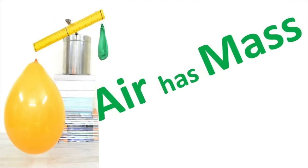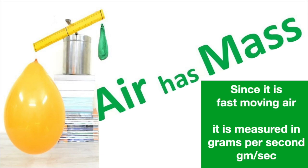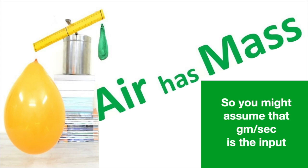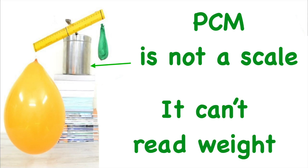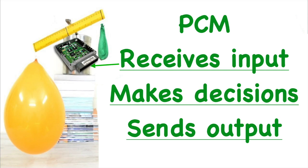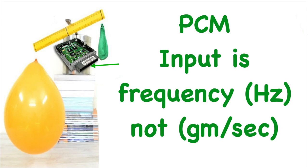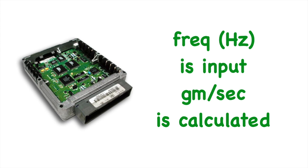What about grams per second? Air has mass, and all mass has weight. Since it is fast-moving air, it is measured in grams per second. You might assume that grams per second is the input, but the PCM is not a scale — it can't read weight. The PCM is a logic device: it receives input, makes decisions, and sends output. The PCM input is frequency, not grams per second. Grams per second is a calculated value, not an input. Frequency, or Hertz, is the input; grams per second is calculated.